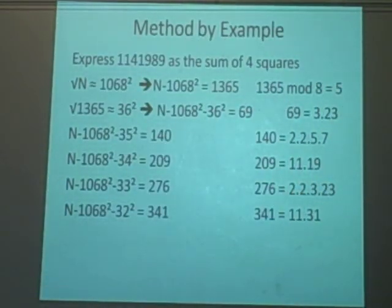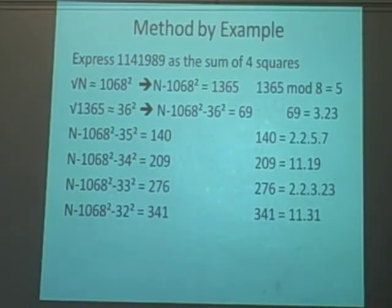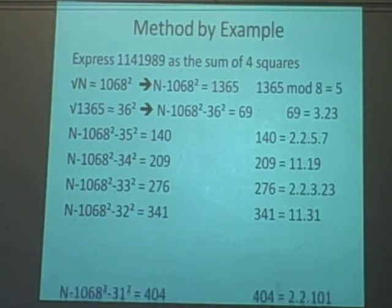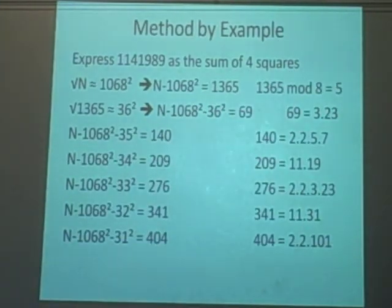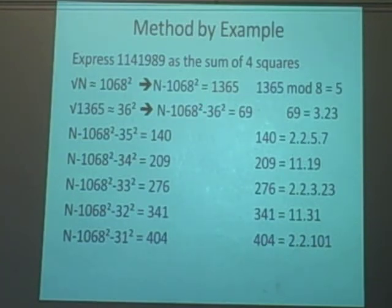Next one, exact same again, so we get 11, has anything happened? 11 and 31 there. That one's, yeah, they're both 3 mod 4, so we've tried another one. We've got minus 31², it's going 404. This is 2×2×101.